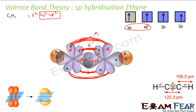So to summarize ethyne: the carbon is sp hybridized. I got two sp hybrid orbitals and two remaining 2p orbitals. The sp-sp overlap gives one sigma bond; the sp-s overlaps with hydrogen give one sigma bond each; and the two pairs of 2p orbitals merge to form the two pi bonds.